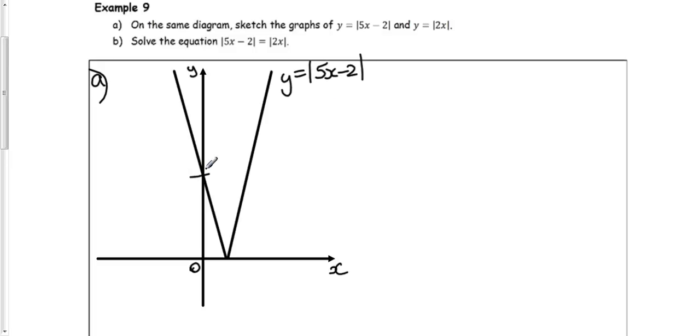It'll go through the y-axis at 0, 2. And it'll go through the x-axis, well, if 0 equals 5x minus 2, x would be 2 fifths. Right, that's the first graph.